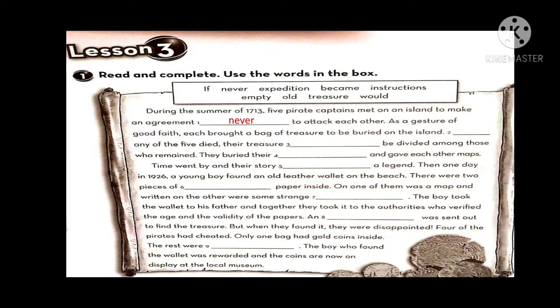If any of the five died, their treasure would be divided among those who remained. They buried their treasure and gave each other maps.